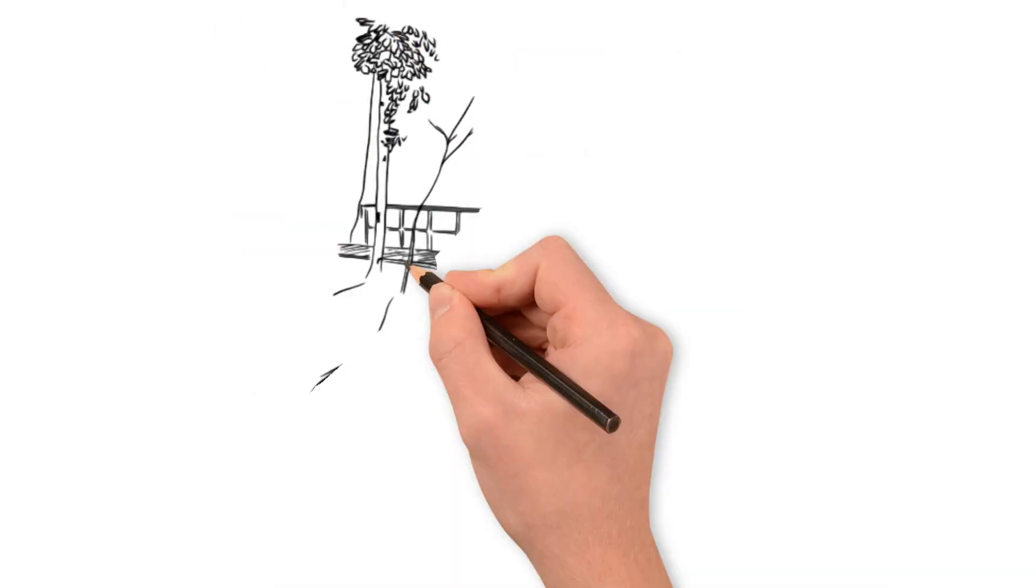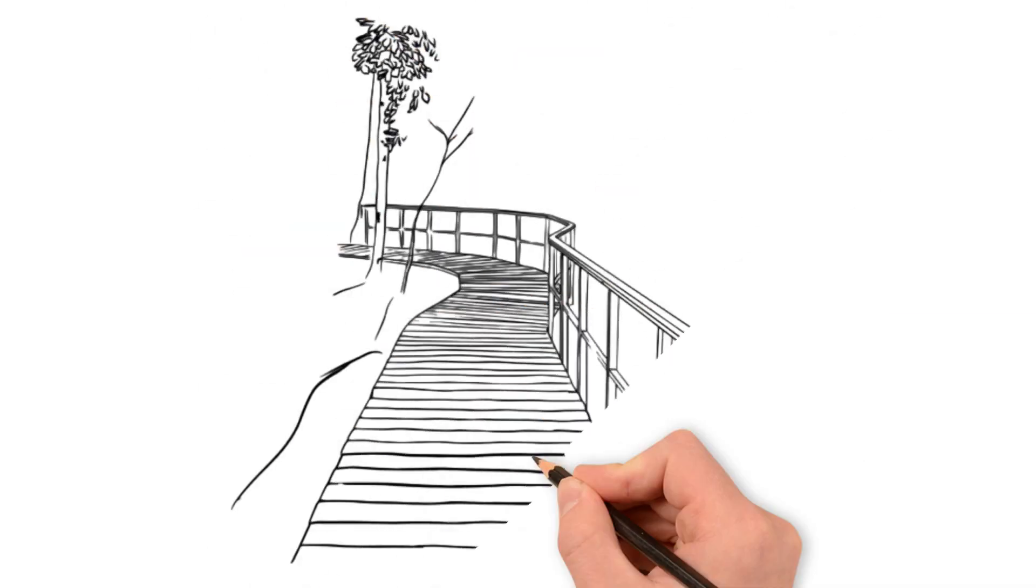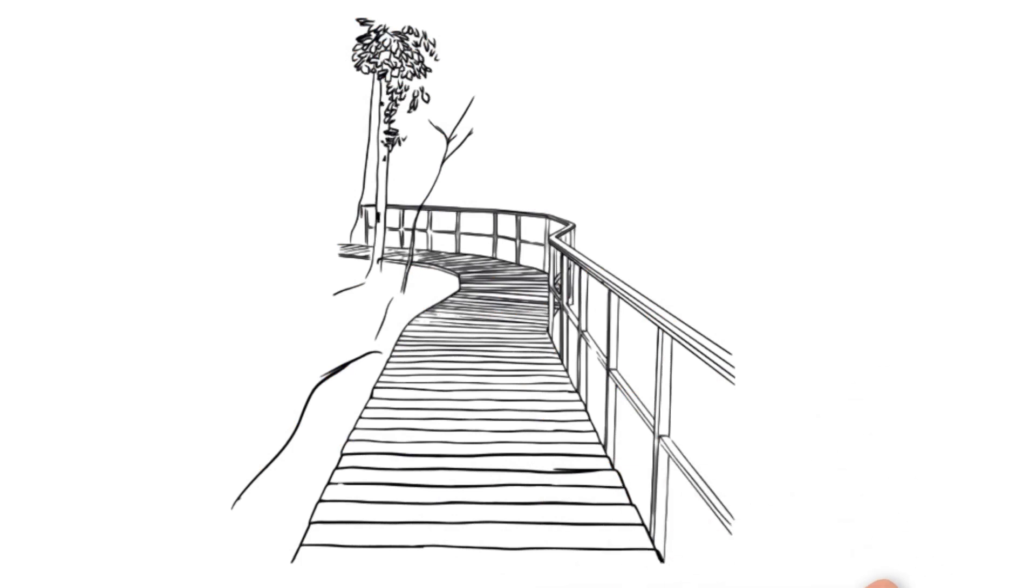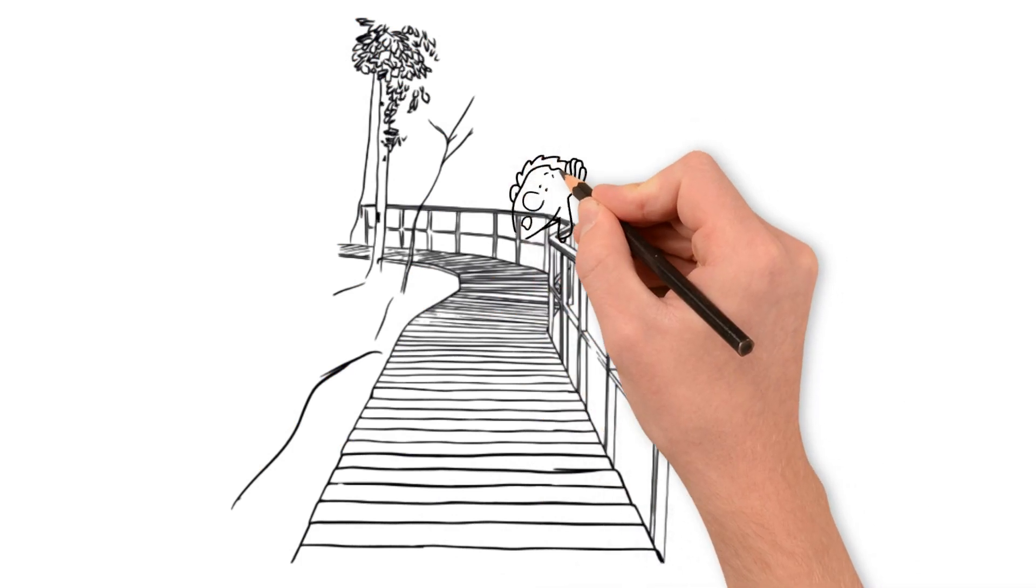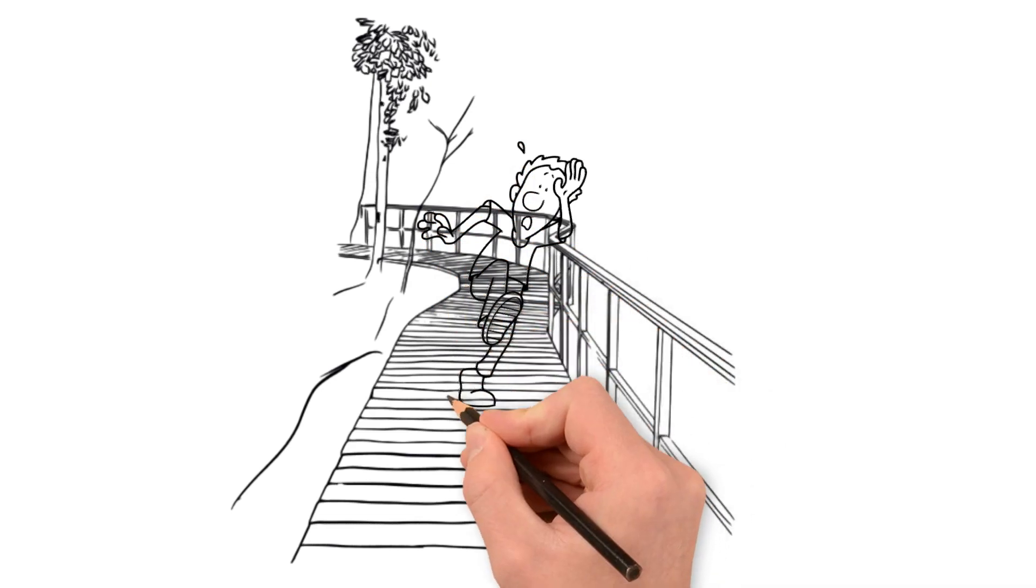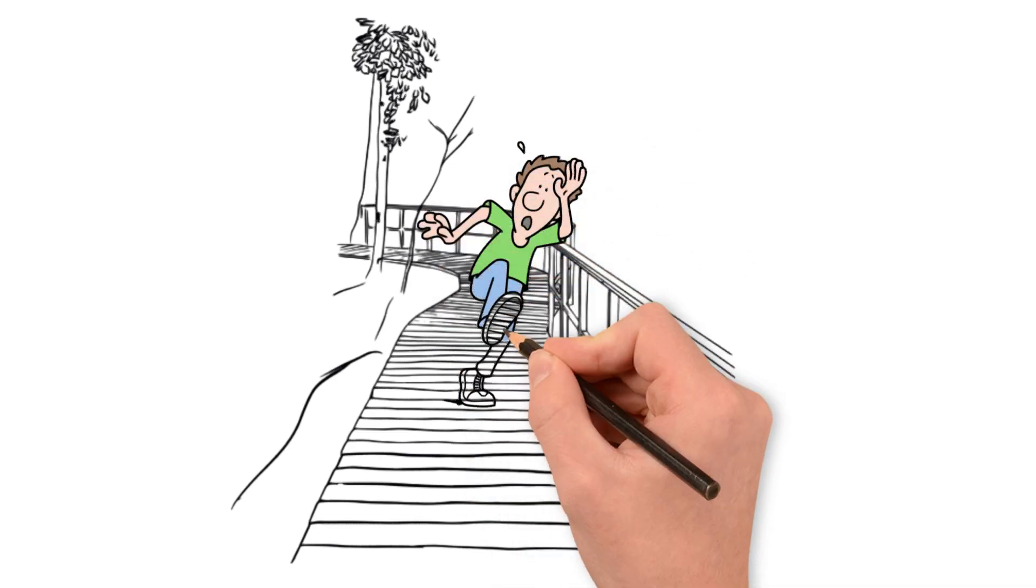Think of it like this, imagine your brain is a rickety bridge over a stormy ocean. Some people inherit wobbly planks, making them more likely to fall if a freak wave, stress, trauma, hits.